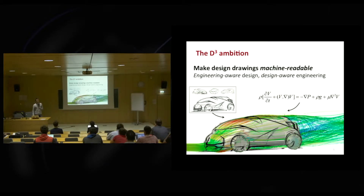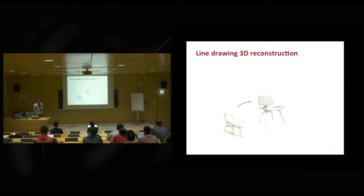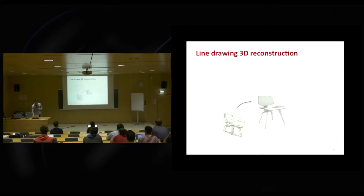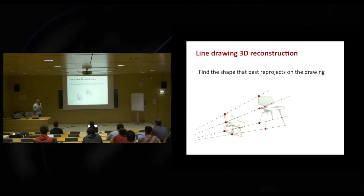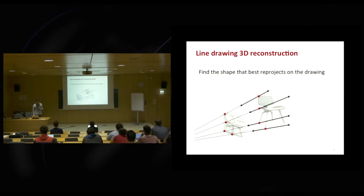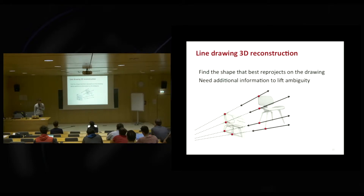The fundamental problem to solve first is to actually recover 3D information from a line drawing, because that's a necessary step before applying engineering tools. This is an ill-posed problem: we start from 2D information and want to recover 3D. One constraint we can enforce is that the reconstructed shape should reproject well onto the drawing, but that's not enough — any point can lie anywhere along the viewing rays, so a distorted shape is equally valid. We need additional constraints to lift that ambiguity.